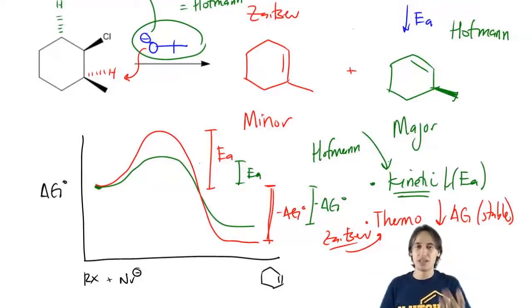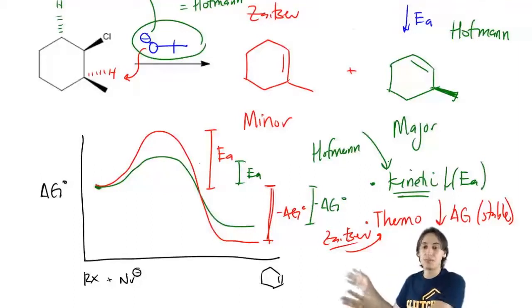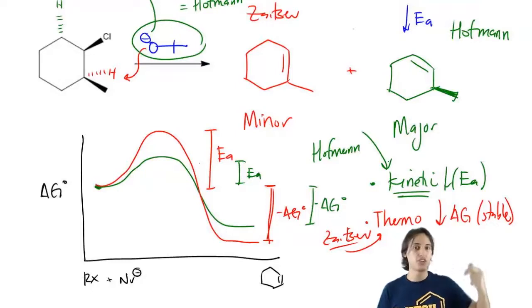The reason I'm telling you this is because this will come up later when we talk about other reactions in Orgo 2. There's going to be kinetic control and thermodynamic control. It's going to be the same kind of principle where I'm looking at either the stability of the end product or whichever one is just the easiest to form at the beginning.